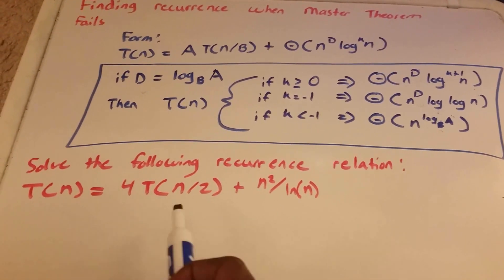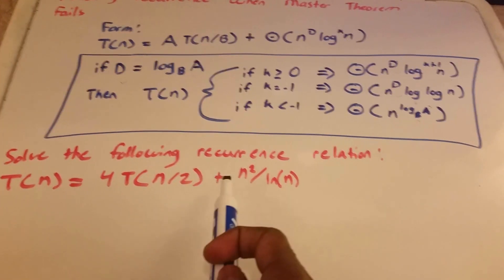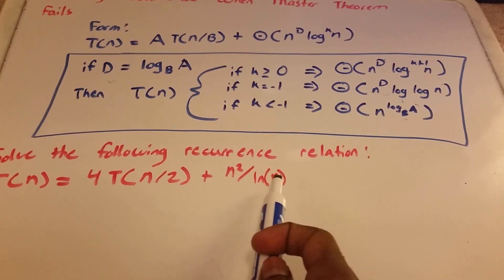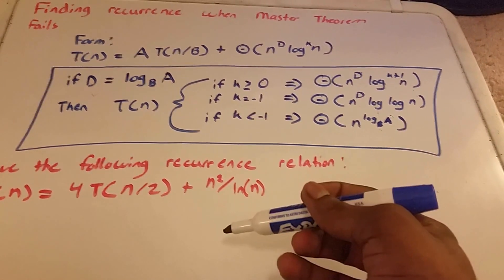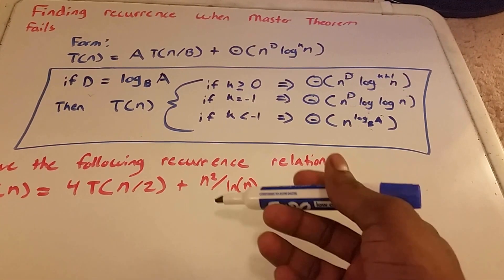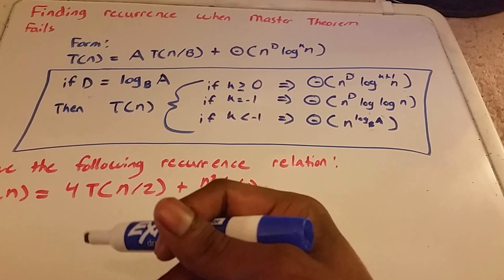But for recurrence in this form, down here, where it says T(n) = 4T(n/2) + n²/ln(n), the other way does not give you an answer. You can't solve this recurrence using the master theorem in some of my other videos.